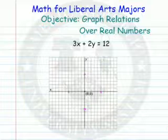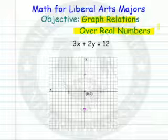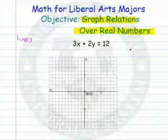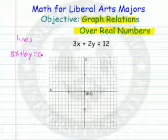In this video, we're going to graph relations over real numbers. What we're actually doing is graphing lines. These are linear equations. They're in the form of what we call ax plus by equals c.